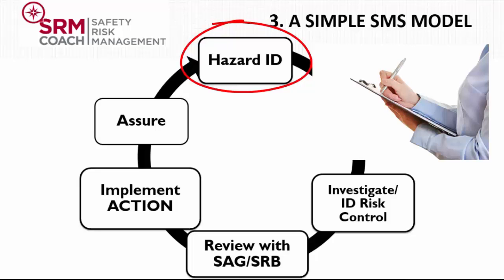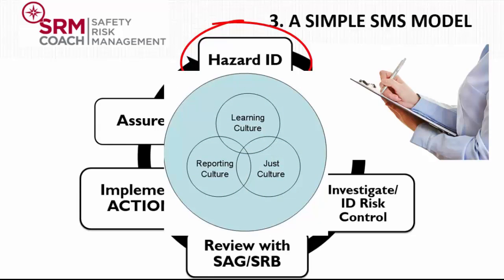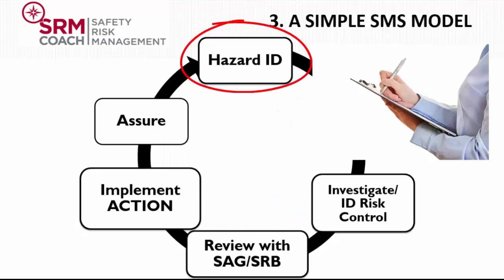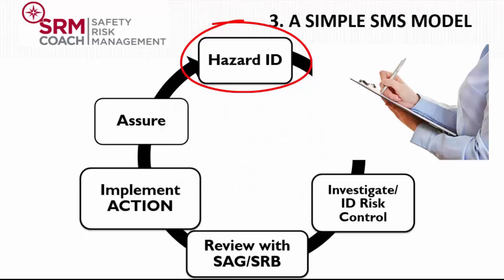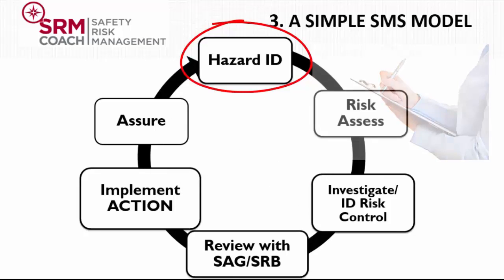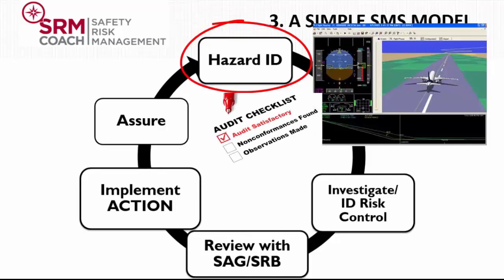It is important that we get information to have a chance to improve the operation. This is why we introduced the concept of just culture. Third, it is very important that staff believe that reporting is useful — that the operation will improve when they highlight a problem. The way to do this is good feedback information to the people who make the reports. This is a safety promotion function. There are many other sources of safety data, such as flight data monitoring and safety audits, which we'll cover in the advanced course.